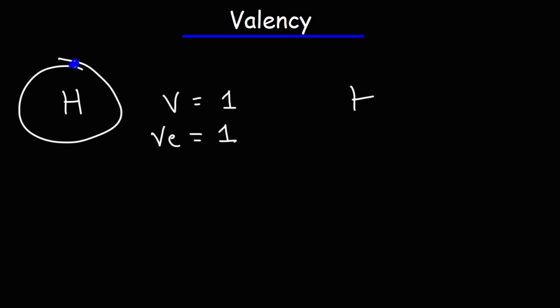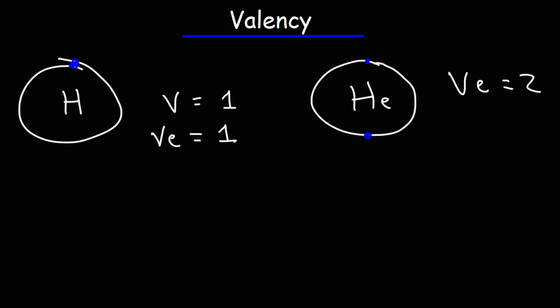Now let's look at another example: helium. Helium is a noble gas. It has two valence electrons. Helium is stable — it's inert. It doesn't participate in chemical reactions under standard conditions. And as a result, because it doesn't accept or donate electrons, its valency is zero. The other noble gases like neon and argon also have a valency of zero. They don't want to give away their electrons, nor do they want to acquire new electrons.